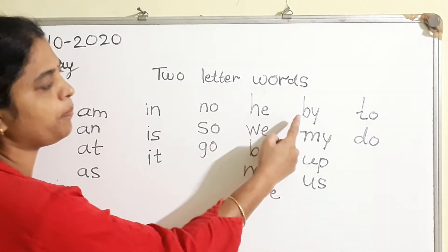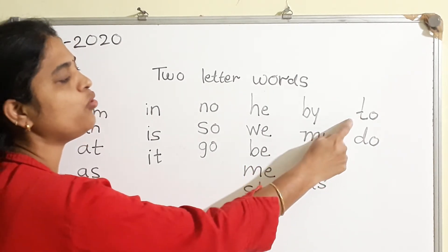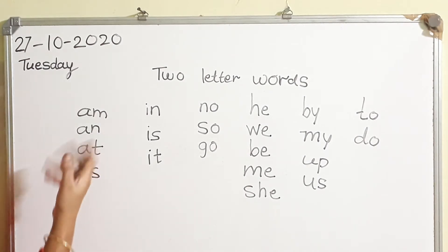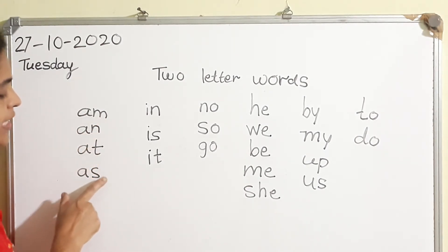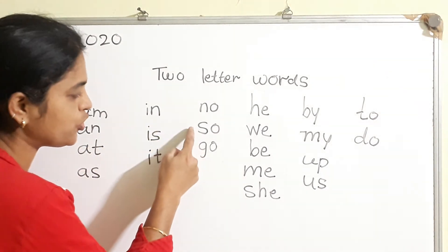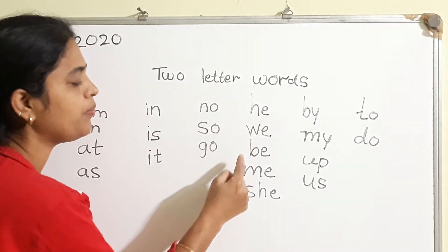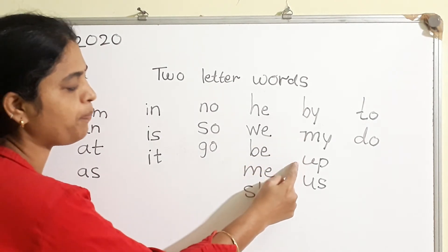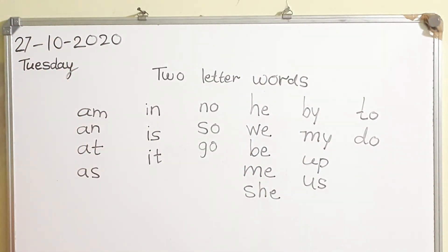By, my, up, us, to, do. Okay, read one more time: a, an, at, as, in, is, it, no, so, go, he, we, be, me, she, by, my, up, us, to, do. Kids, this is very, very important.